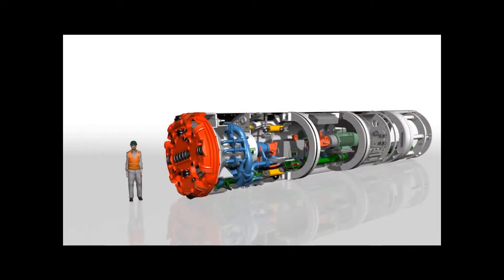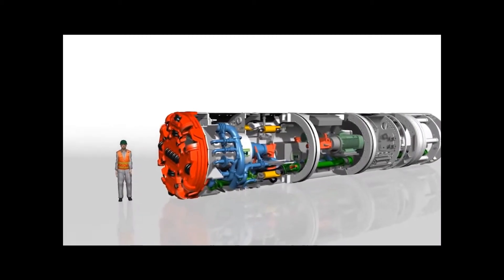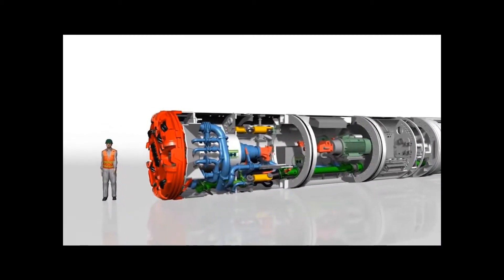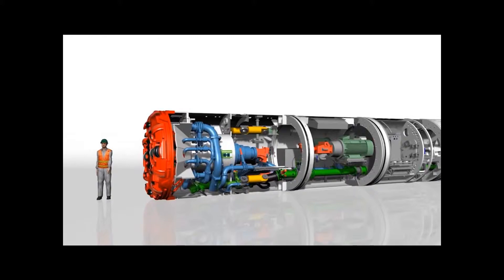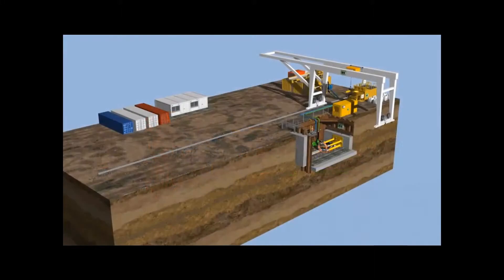The AVND machine series shown here is an advanced version of the proven AVN technology. Thanks to a pressure chamber, this machine can switch from slurry to mix shield mode during ongoing operations and thus open up a greater range of heterogeneous soils. The following animation shows the use of an AVND machine.